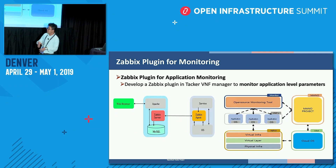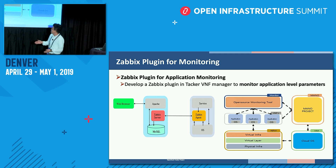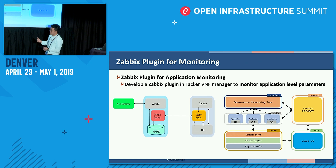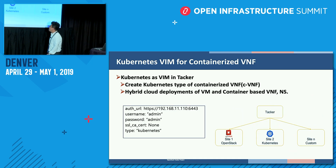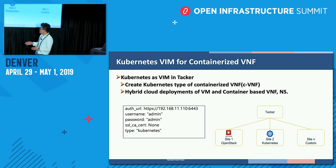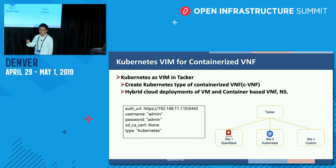Now I'll cover more detailed features in TechLight. One of the features is the Zabbix plugin, which is proposed to support monitoring of applications in the VNF. With this driver, we can check the status of applications. Another feature is the Kubernetes VIM. Previously, TechLight only supported OpenStack as a VIM, but this feature adds Kubernetes VIM support, so you can deploy containerized VNFs to Kubernetes using TechLight.